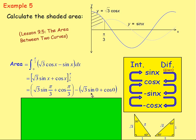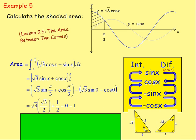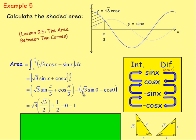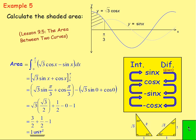Using exact value triangles: sin(π/3) = sin(60°) = √3/2, so √3 × √3/2 = 3/2. cos(π/3) = cos(60°) = 1/2. Subbing in 0: √3·sin(0) = 0, and cos(0) = 1. So we have (3/2 + 1/2) − (0 + 1) = 2 − 1 = 1. Because we're finding the shaded area, our final answer is 1 square unit.